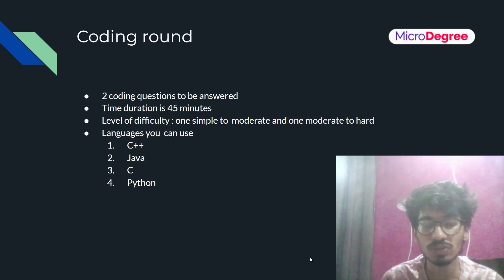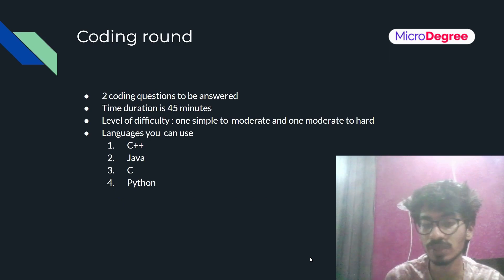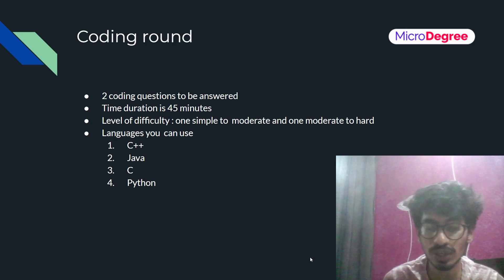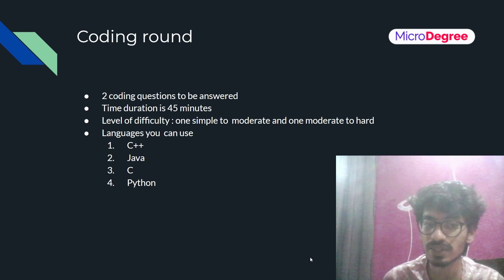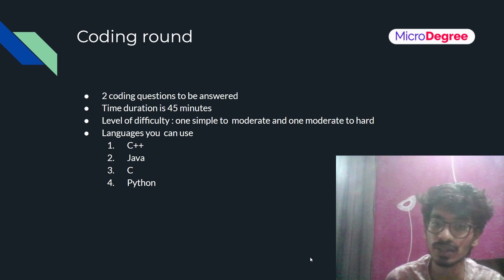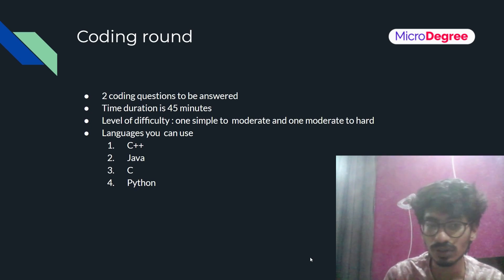Once you have qualified the written test, you will receive a mail inviting you to the coding round. This round has two coding questions — one is simple level and the other is hard level. You can use any language of your choice: C++, Java, C, or Python. Solve both questions to qualify for the next round.